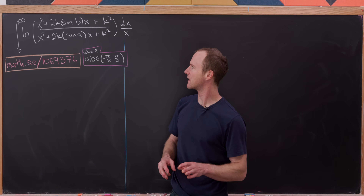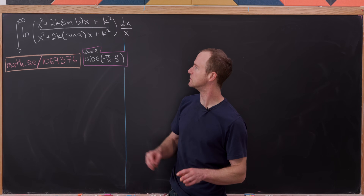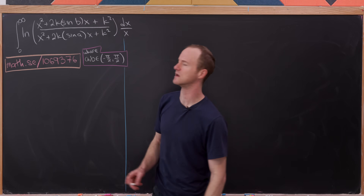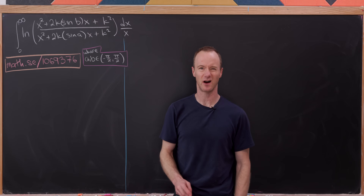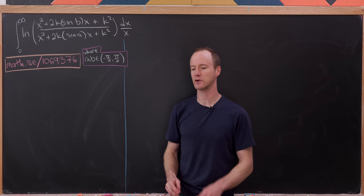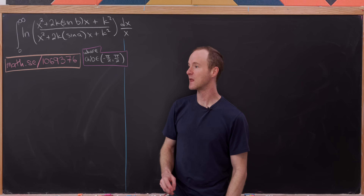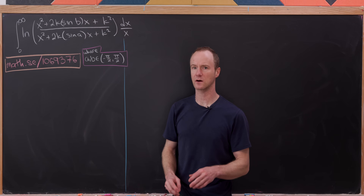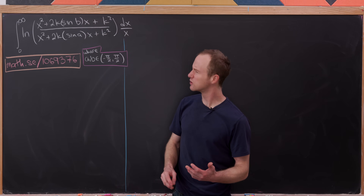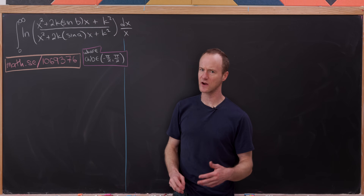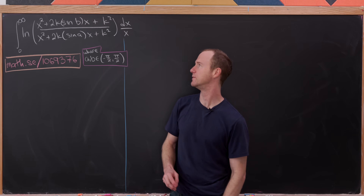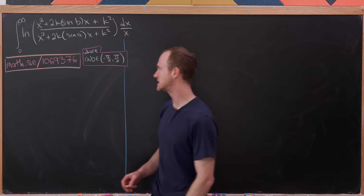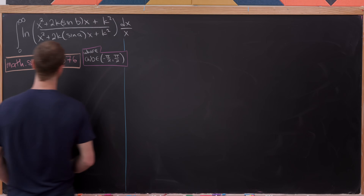The first thing to observe is that the expressions in the numerator and denominator of the natural log look pretty similar, and furthermore they're quadratics whose squares can be completed pretty easily. That's in fact what we're going to do.